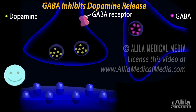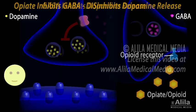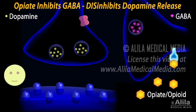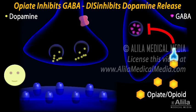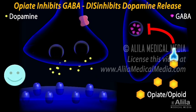Normally, GABA, another neurotransmitter, inhibits dopamine release in the nucleus accumbens. By binding to receptors on GABA inhibitory neurons, opioids reduce GABA's activity, ultimately increase dopamine release, and induce pleasurable feelings.